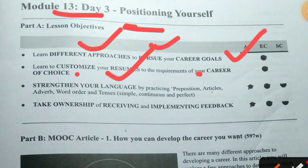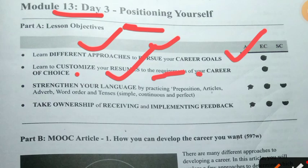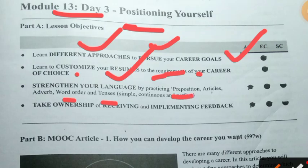The next lesson objective is to strengthen your language. You have to focus on practicing your positions, articles, and adverbs. While making sentences, focus on how to make sentences in a good way — good sentence structure. You need to focus on tenses: simple, continuous, and perfect tenses. If you focus on these things, you can communicate well.